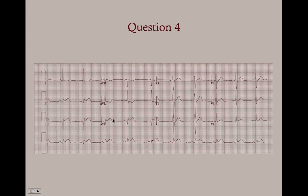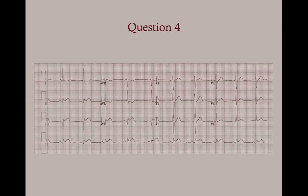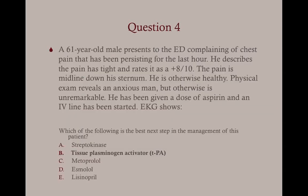Here you have leads 2, 3, and AVF with ST elevation — this is an inferior wall MI. The pain has been going on for the last hour. Given aspirin, gotten the EKG, started an IV line — now what? Options include streptokinase, tissue plasminogen activator (TPA), metoprolol, esmolol, or lisinopril. The answer is tissue plasminogen activator, option B.